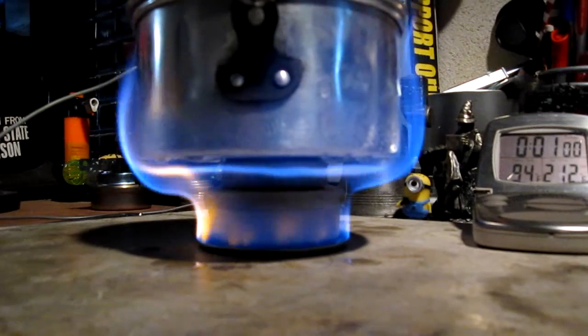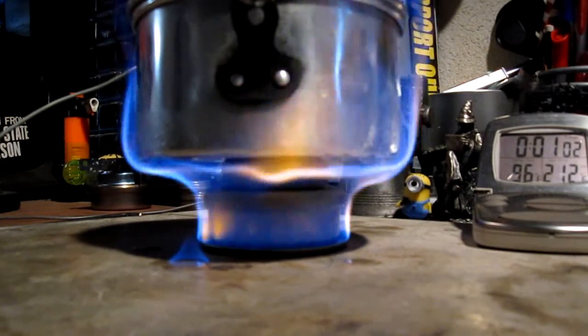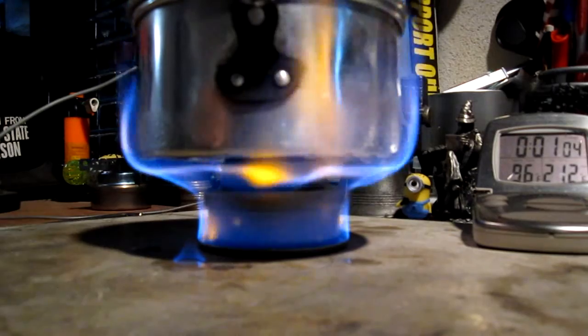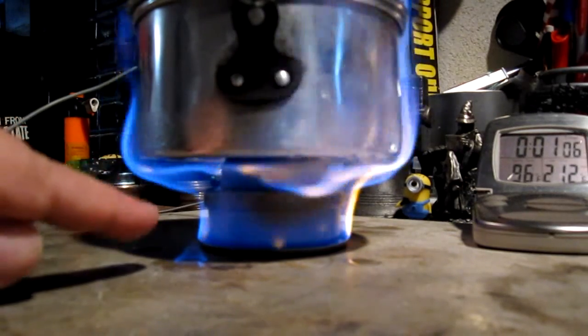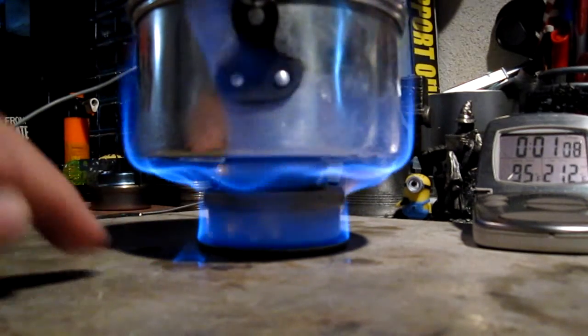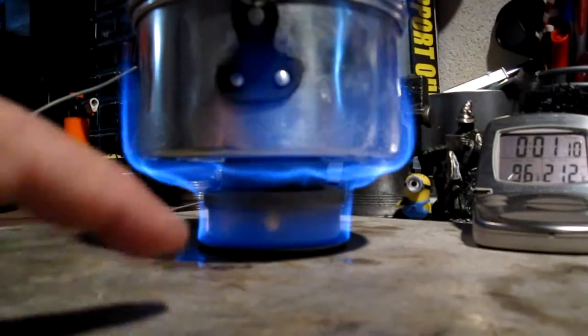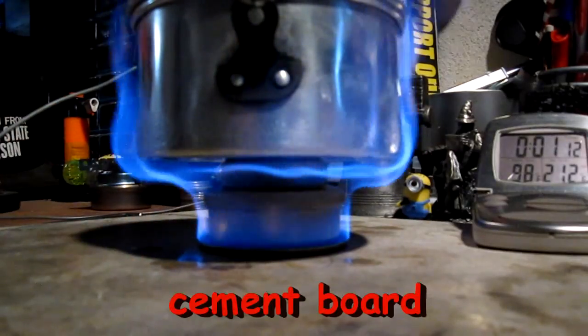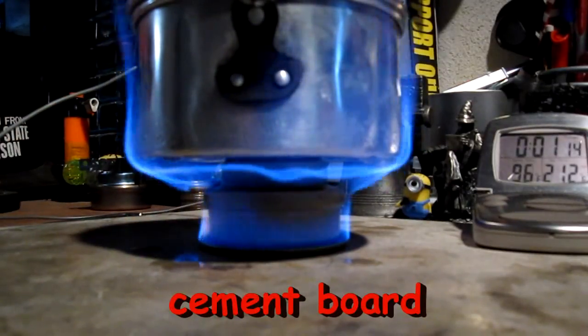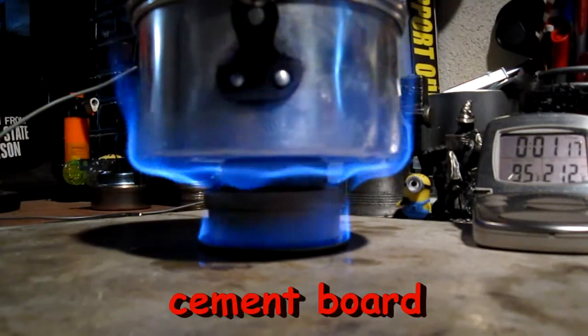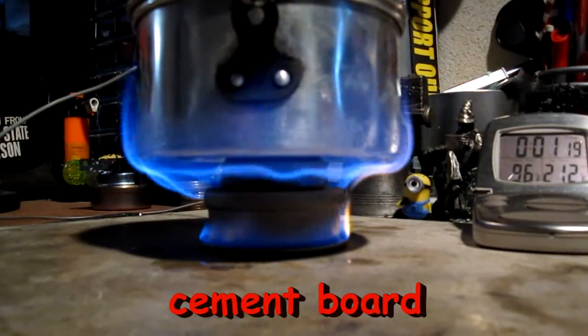Now, this again was two milliliters of methanol. I think you can see it, some of it is condensing off the pan and then dripping onto the table. Again, that's why I use a concrete board here. It kind of looks like two milliliters of alcohol is too much for the primer pan.